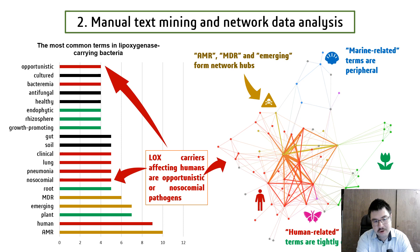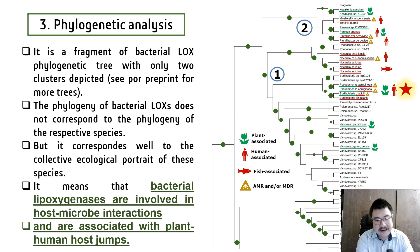Moreover, we can see that in humans, lipoxygenase carriers are usually opportunistic or nosocomial pathogens. Now we have full statistical evidence for this and are able to explore the correlation with the phylogeny of these lipoxygenases. The phylogenetic trees fully correlate with this collective ecophysiological profile of bacterial lipoxygenases and lipoxygenase-carrying bacteria.